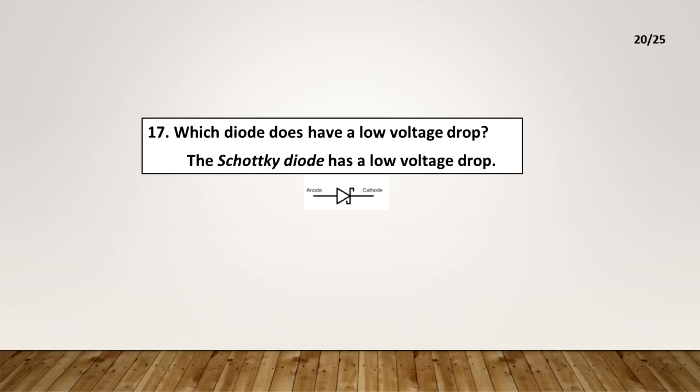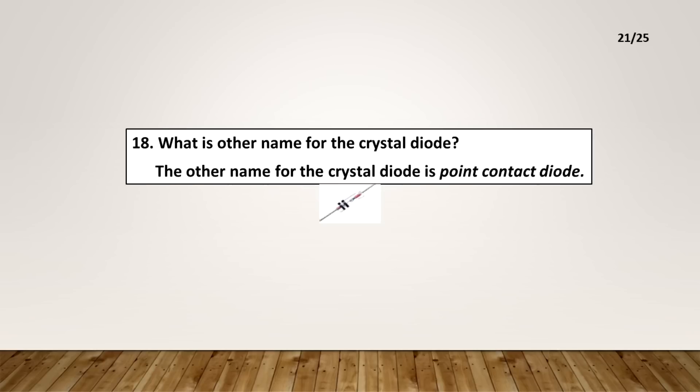Which diode does have a low voltage drop? The Schottky diode has a low voltage drop. What is the other name for the crystal diode? The other name for the crystal diode is point contact diode.